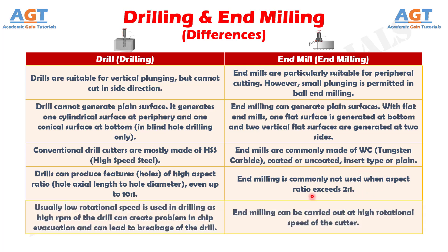Number nine: usually low rotational speed is used in drilling, as high RPM of the drill can create problems in chip evacuation and can lead to breakage of the drill, whereas end milling can be carried out at high rotational speed of the cutter.